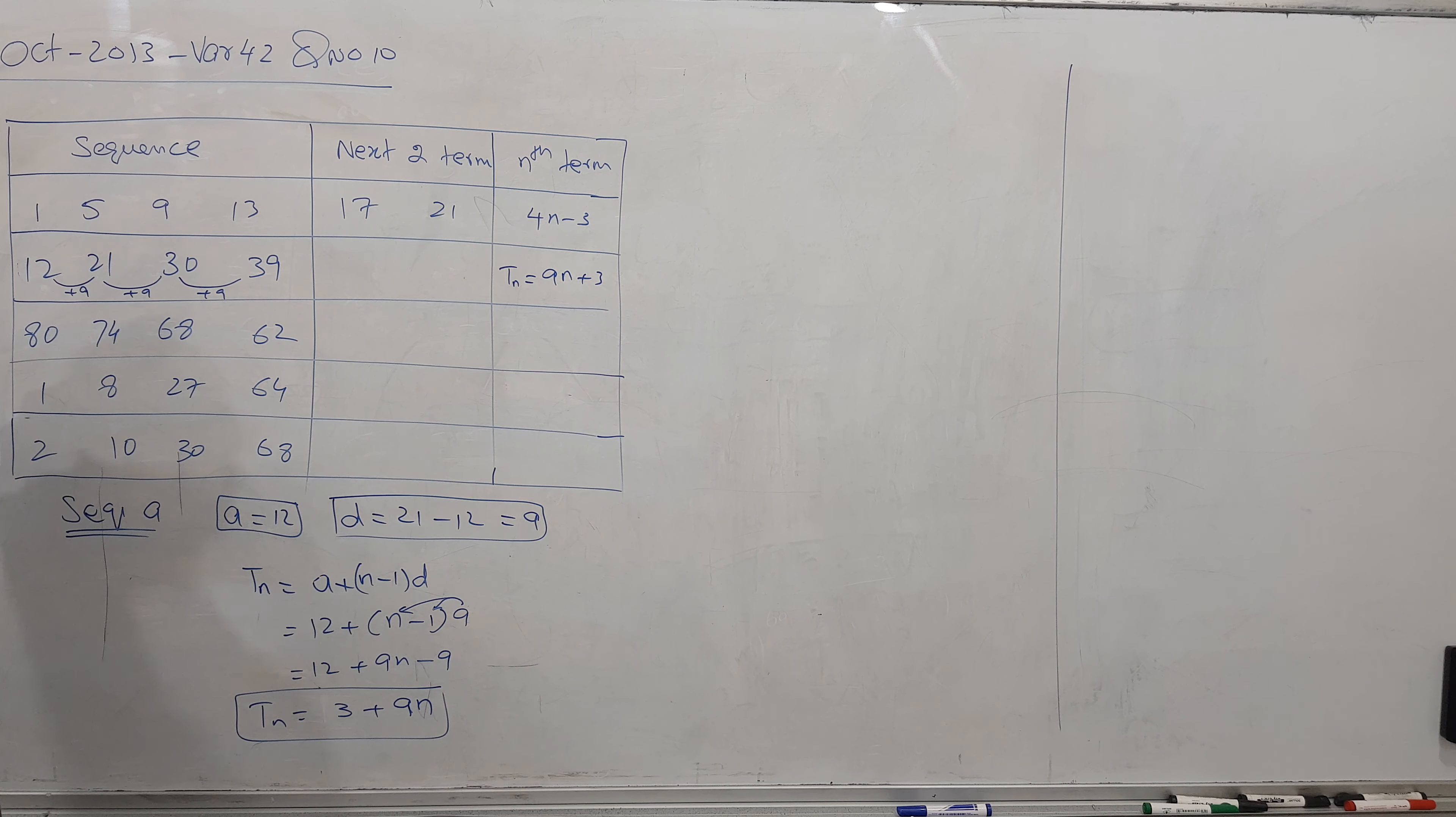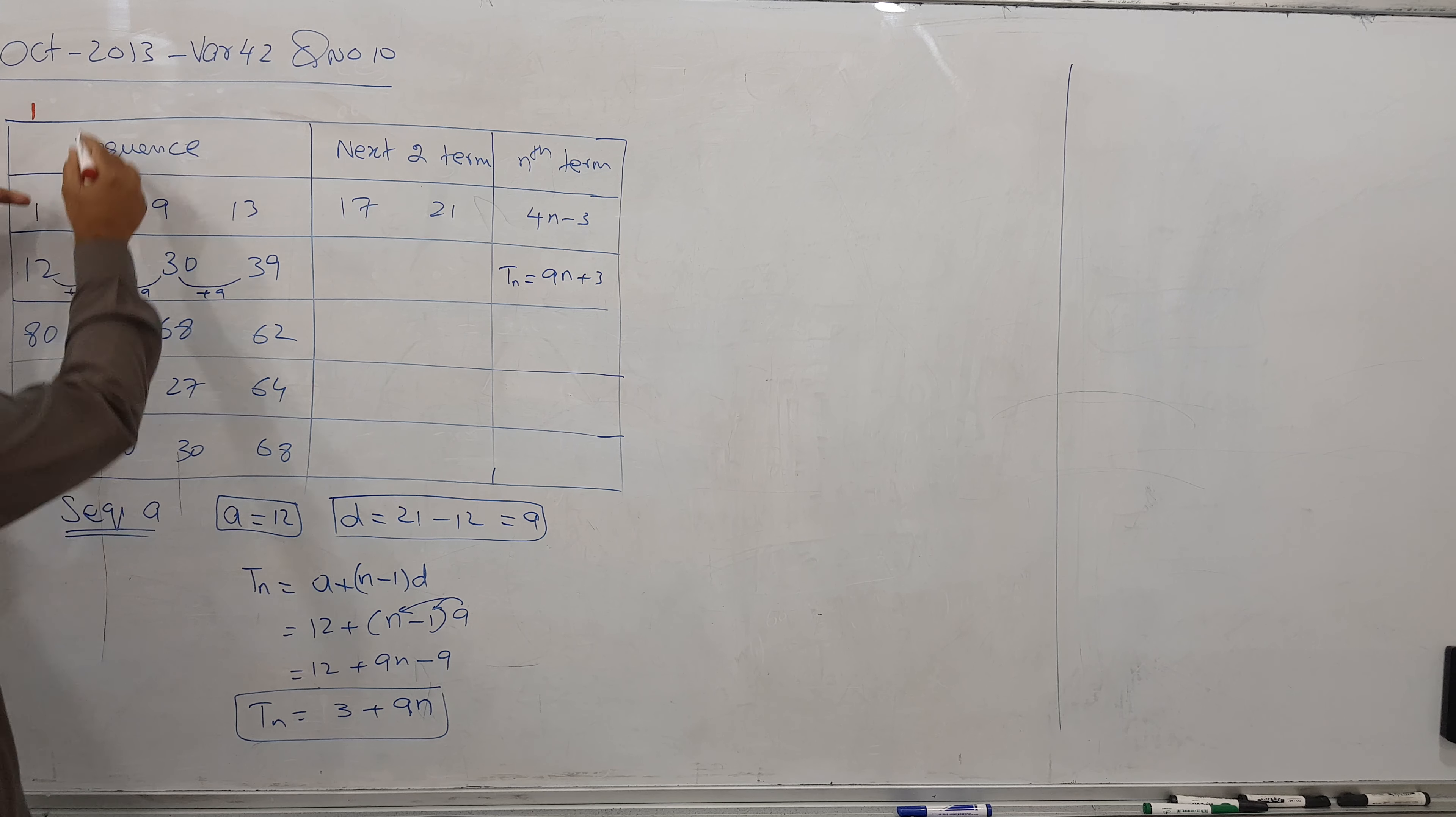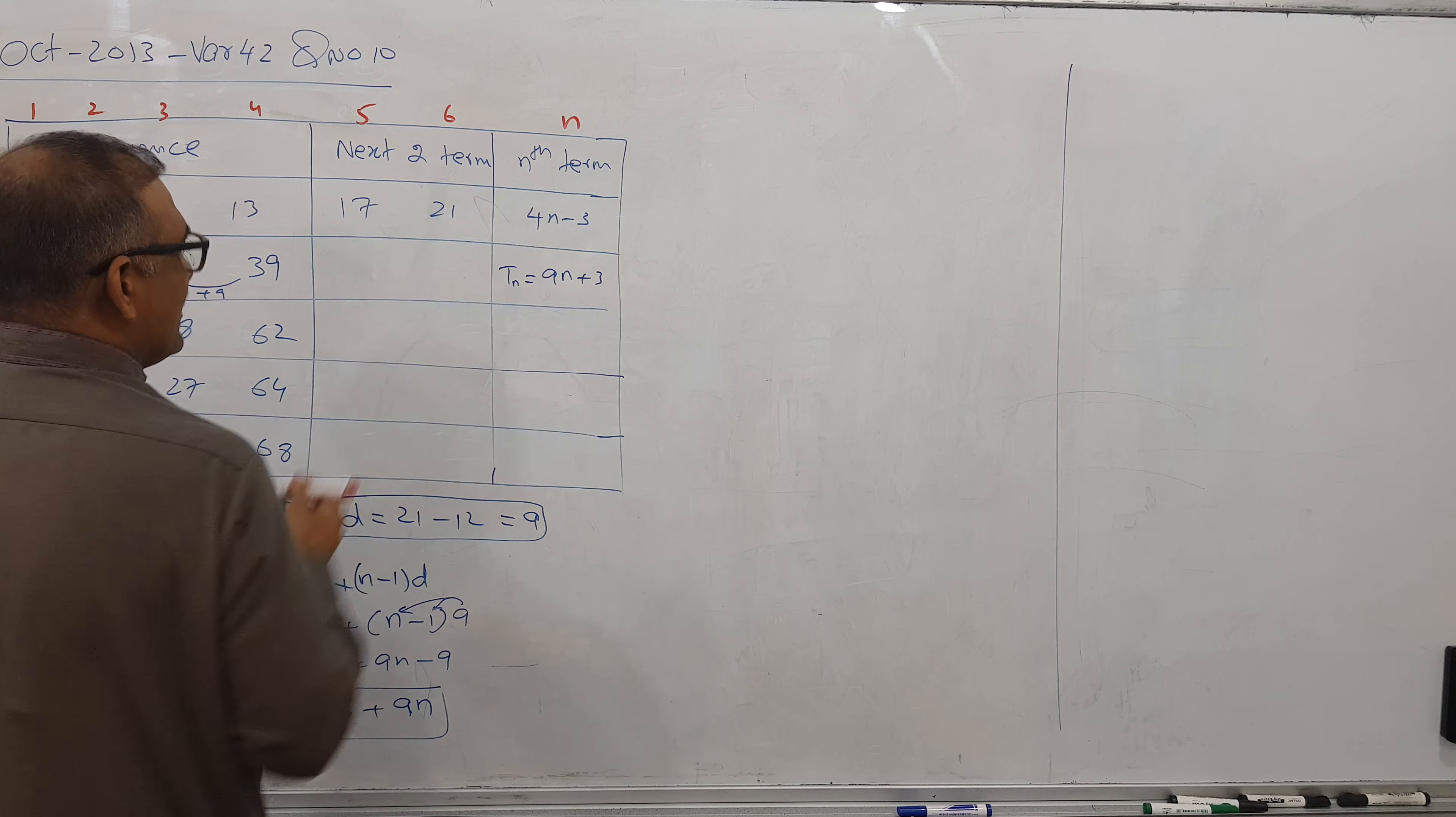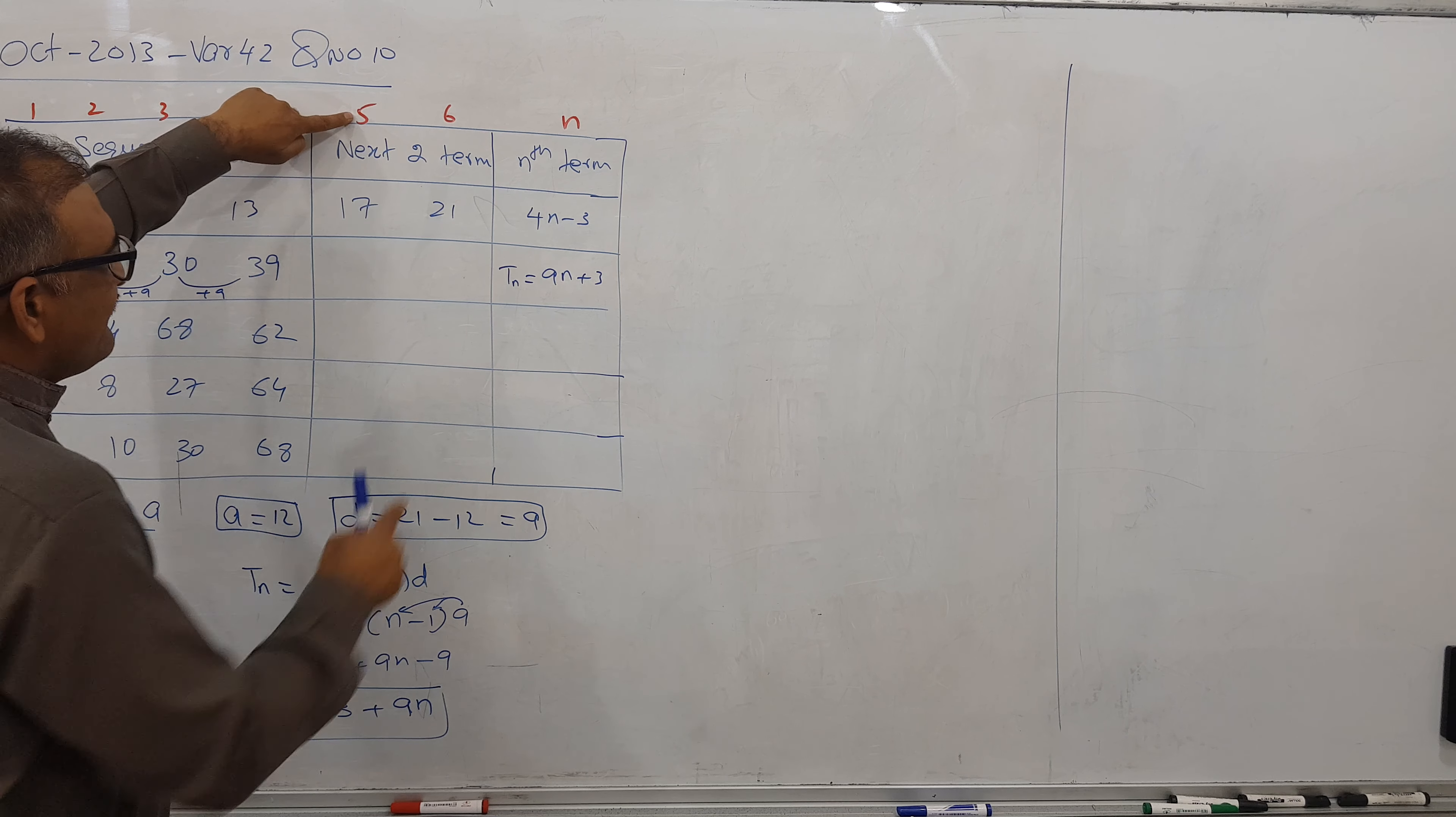If I'm looking at this sequence, I can write a special thing here which will help us solve the question. This is called term number 1, this is called term number 2, this is called term number 3, this is term number 4, 5 and 6, this is called n. Sometimes examiner will not give to you, you will write your own. It will help you a lot.